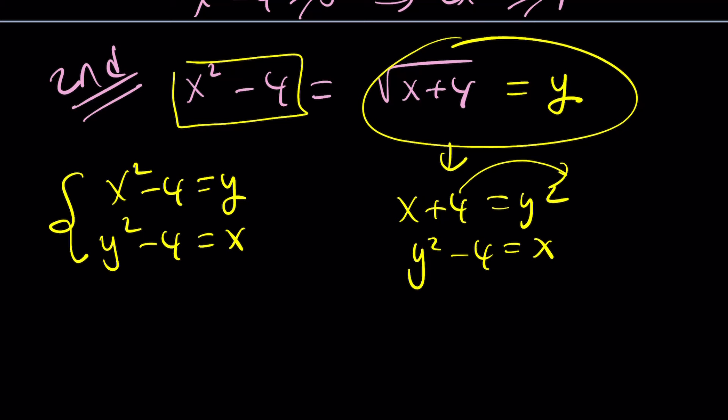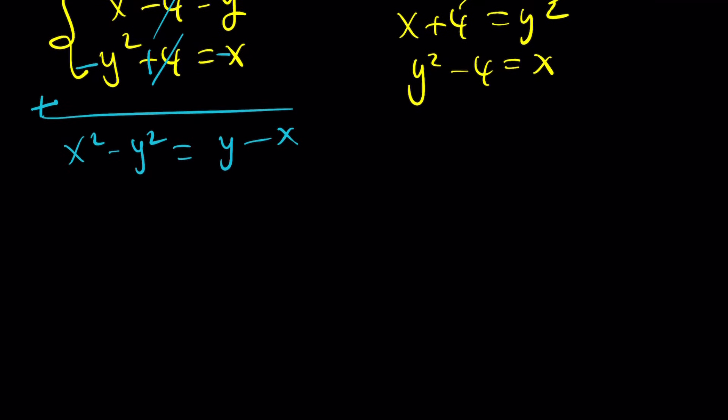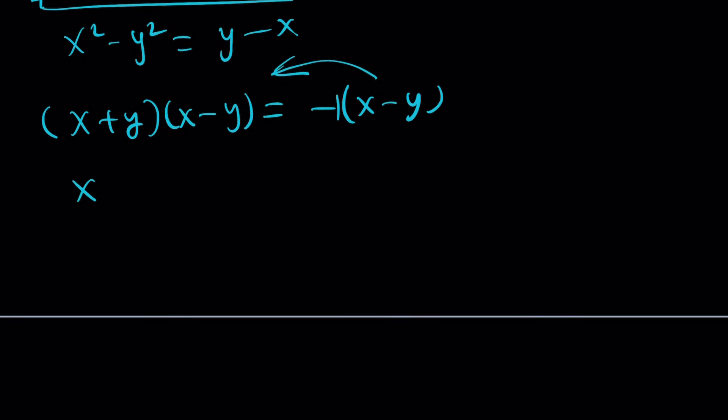So we can go ahead and subtract these equations. Negate, negate, and negate, and then add these two. 4 is going to cancel out. x squared minus y squared equals y minus x. Let's go ahead and factor this as x plus y, x minus y. And this is just the opposite of x minus y with a negative 1. And then bring it over here with a plus 1.